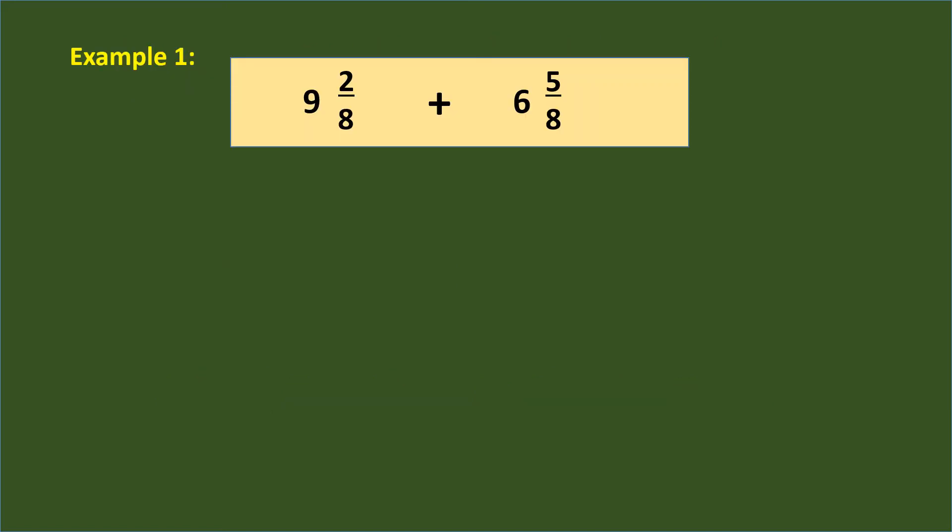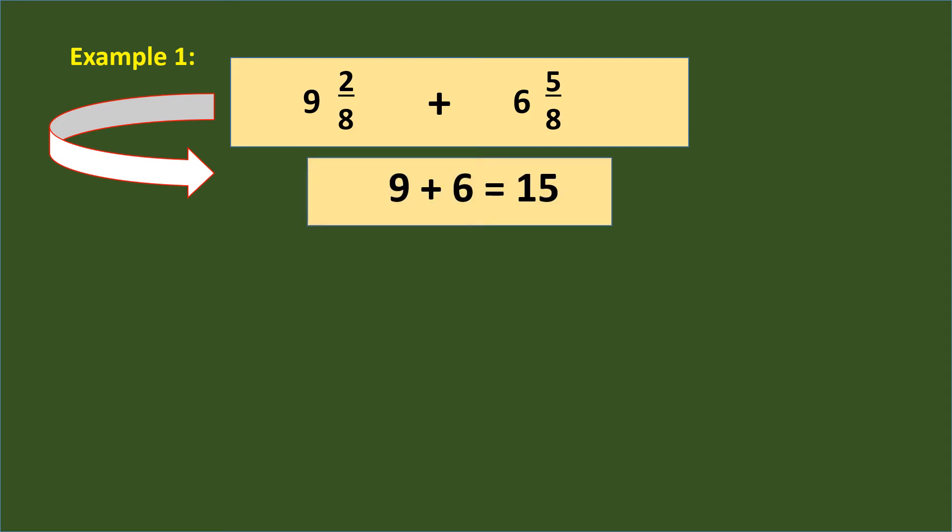Here is the first example. In adding mixed fractions in similar form like 9 and 2/8 plus 6 and 5/8, the first step is to add the whole numbers. So 9 plus 6 equals 15.